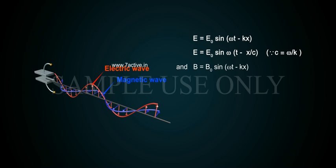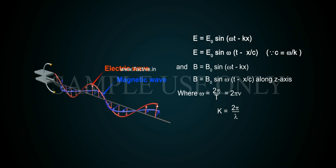And B equals B₀ sin(ωt - kx) equals B₀ sin ω(t - x/c) along z-axis, where ω equals 2π/T equals 2πν, and k equals 2π/λ.